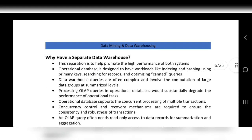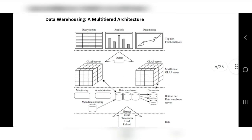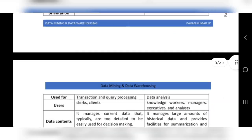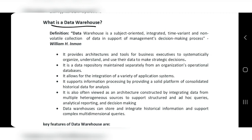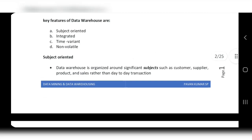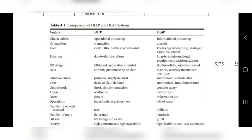Why do we need a separate data warehouse? Because the operational database only answers direct queries; it does not provide insights into trends. The data warehouse exists specifically to provide that deeper analytical understanding. From the exam point of view, the most important things to know are the definition of data warehouse and its four key features.